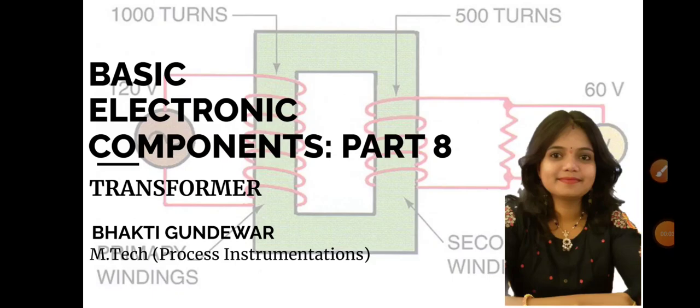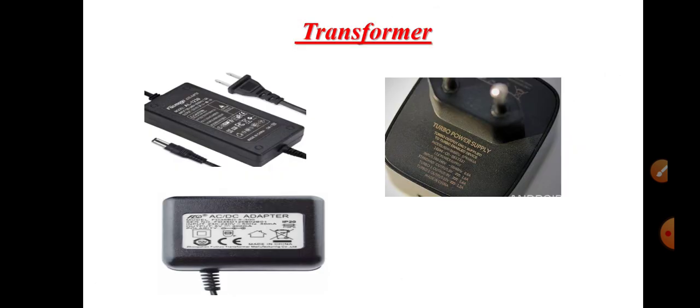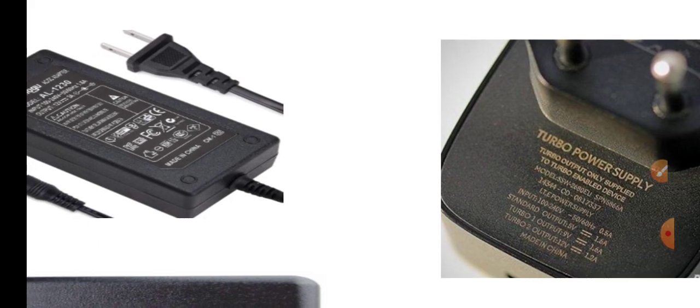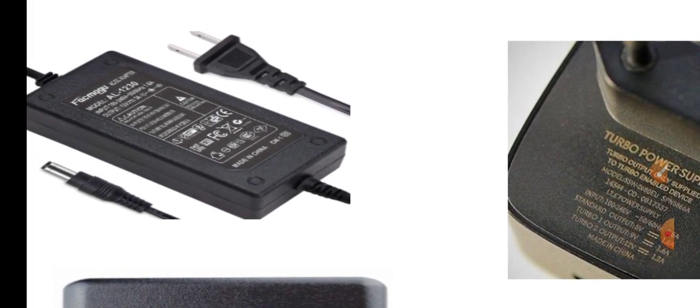Hi everyone. In this video I will discuss a very important topic in basic electronic components, that is the transformer. Before going to discuss about the transformer, we all know about the adapter and the mobile charger. In the first photograph, we can read the input range is 100 to 240 volt and the current value is 1.6 ampere.